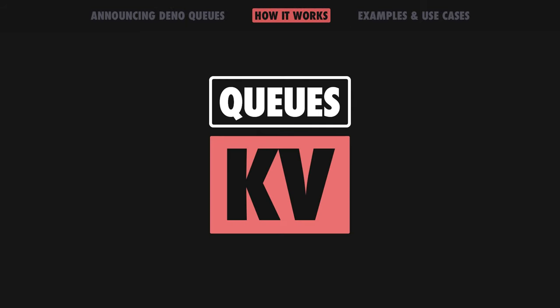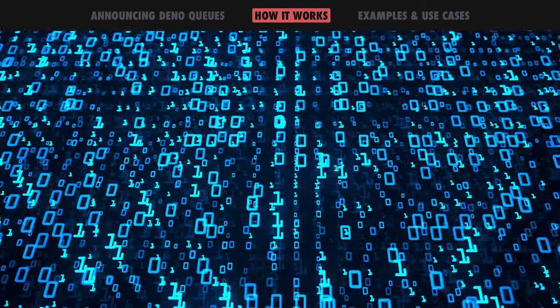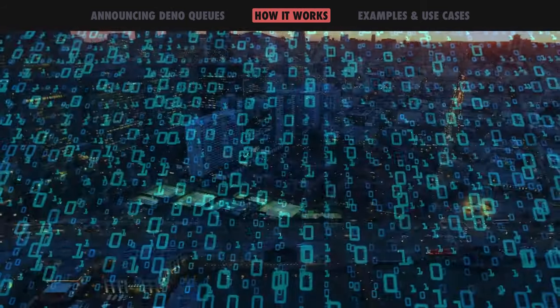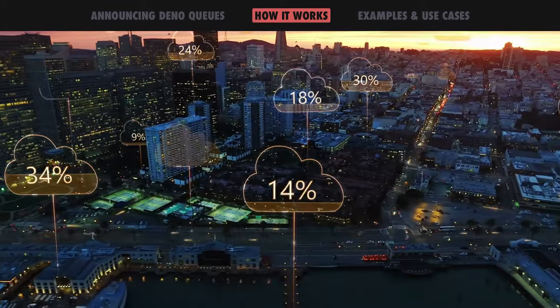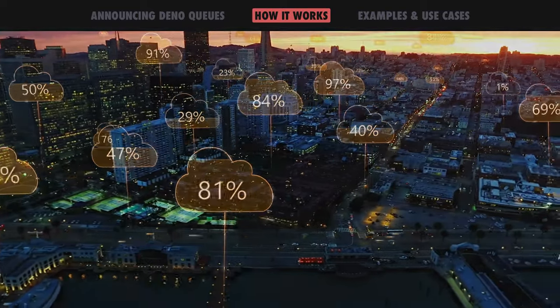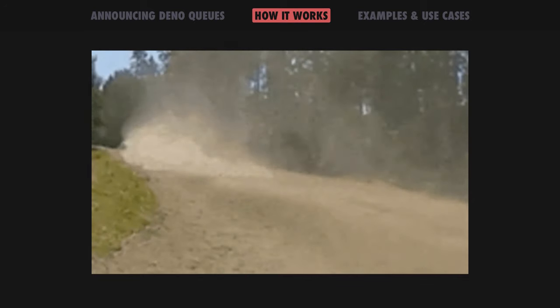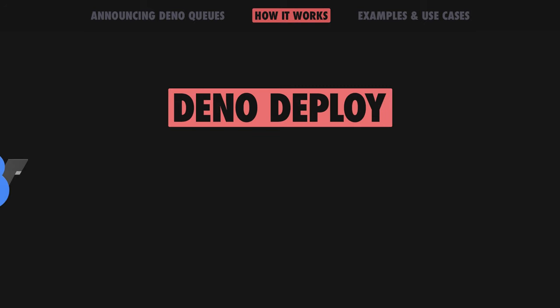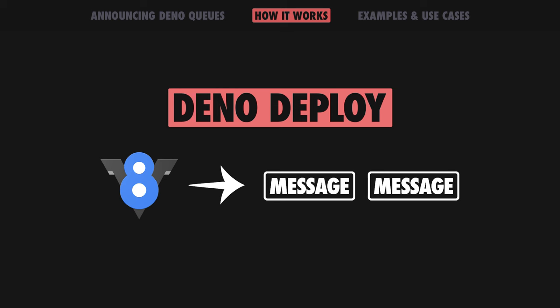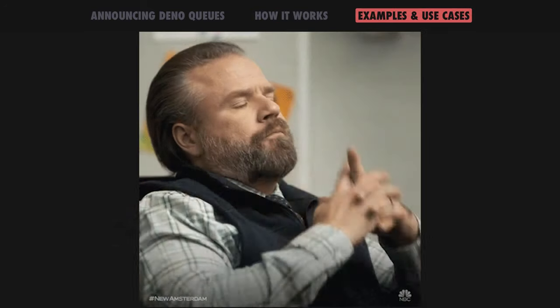Since queues are built on DinoKV, they use SQLite when running locally and FoundationDB when running on DinoDeploy for maximum availability and throughput. Running queues on DinoDeploy is optimized for performance — DinoDeploy spins up V8 isolates on demand and dispatches messages when they are available for processing.